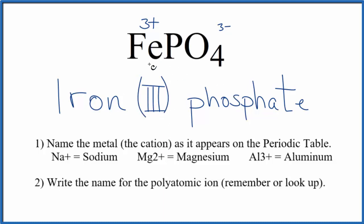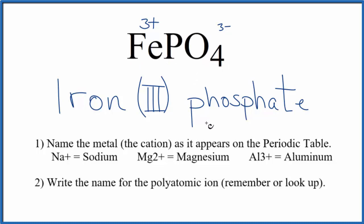That makes the name for FePO4 iron(III) phosphate. If you had the name and were writing the formula, you'd know the charge on iron is plus 3 because of the 3 here. Iron's plus 3, and you've memorized that the phosphate ion is 3 minus, so it would just be FePO4 as the formula for iron(III) phosphate. This is Dr. B with the name and formula for iron(III) phosphate, FePO4. Thanks for watching.